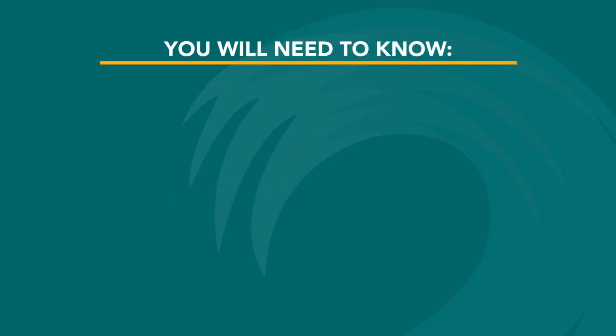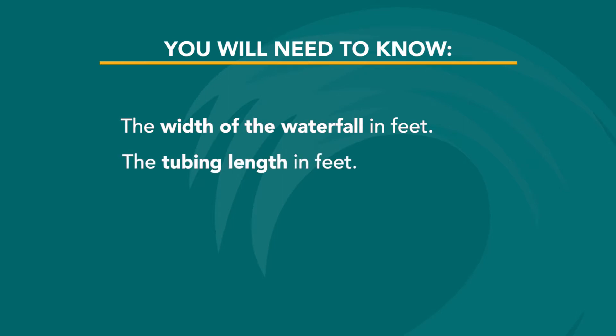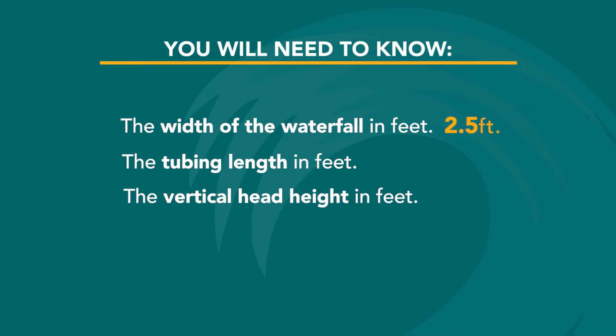Before we start, you will need to know the width of your waterfall, the length of tubing between the pump and the top of the waterfall, and the vertical head height, which is the distance from the surface of the water the pump is in to the top of the waterfall. In this example, the width of the waterfall will be 2.5 feet, the tubing length will be 25 feet, and the vertical head height will be 10 feet.